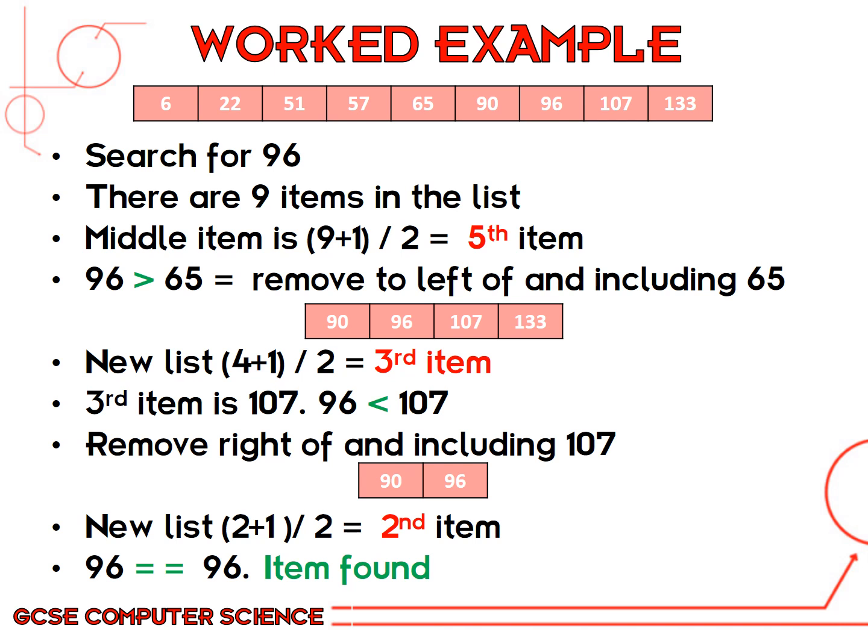That leaves us with four items left: 90, 96, 107, and 133. If we repeat the steps of the algorithm again, we need to find the middle item. With four items, add one to get five, divide by two to get 2.5, round up, so the third item along is what we're looking for — it's 107. We compare 96 to 107, and it's less than it, so we get rid of 107 and everything to the right of it, so 107 and 133 are now gone. That leaves us with two items. Add one to get three, divide by two to get 1.5, which makes our middle point 96. And 96 is equal to what we're looking for, so you stop the algorithm. The main thing to remember is you just add one to the number of items and divide by two — that gets you your middle item.